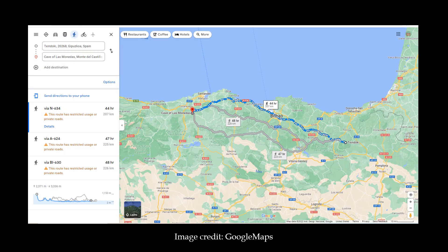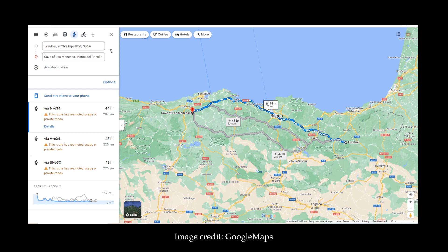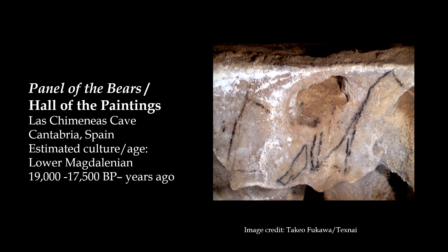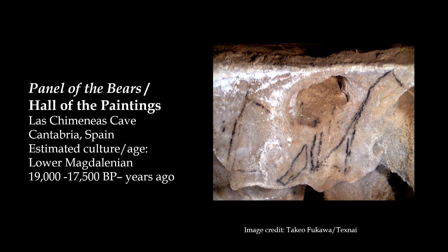The current walking time between Chindoki and the Las Monidas cave is about 44 hours. In continuing our investigation of the mountain landscape pareidolia cave art hypothesis, we journey to Pica Panmenera in Asturias, Spain. Pica Panmenera is a fairly low mountain at 763 meters, but has a lot of character. Regional mountaineers refer to this peak as the Little Matterhorn, based on similar geometry with the Matterhorn of the Alps. There is a rounded hill to the viewer's left, known as Pendendo. Pica Panmenera has some resemblance to a panel in the Hall of Paintings at the Las Chimineas cave. I have taken the liberty to name this scene the panel of the bears. Can you see the bears?